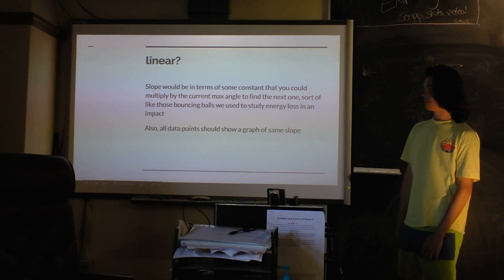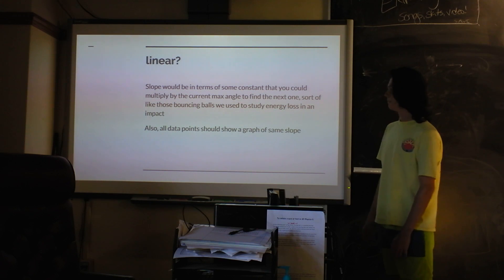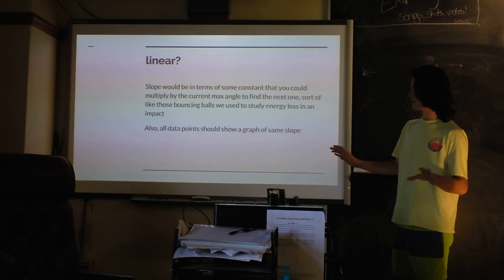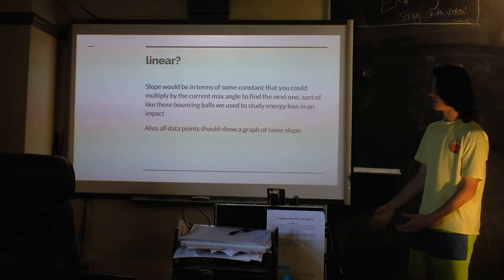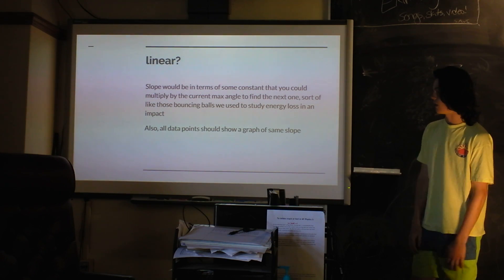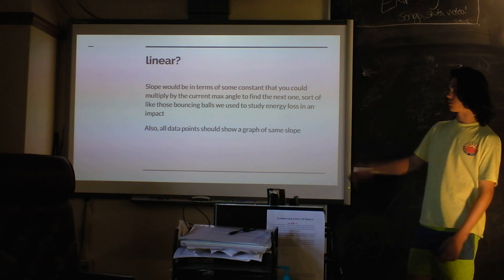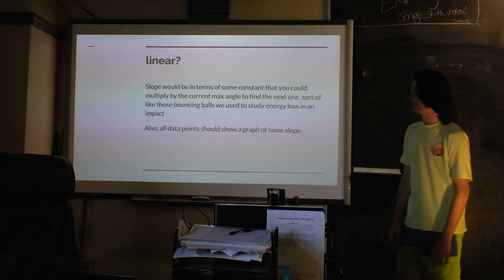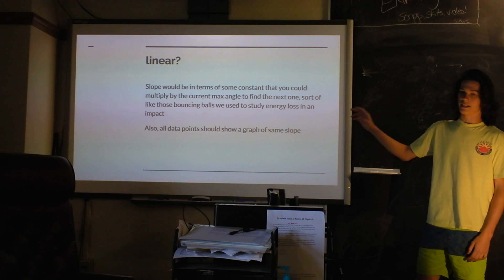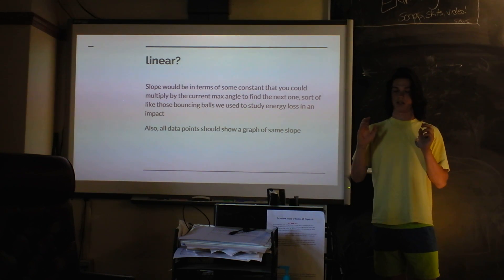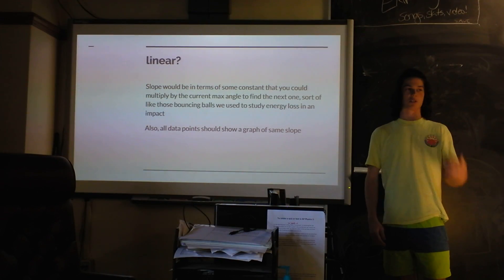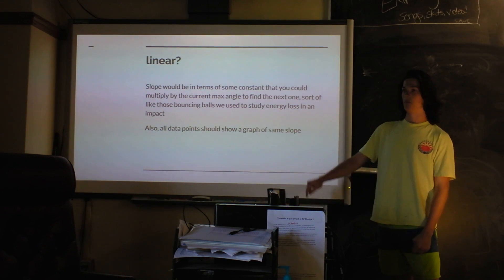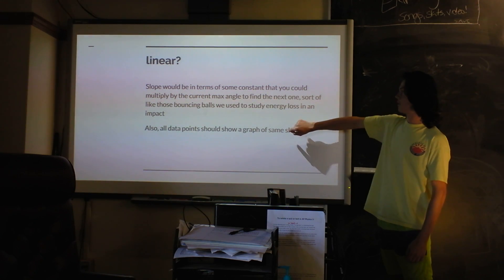Because naturally, you know, pretty sure it's not linear. But just to avoid any sort of preconceptions, I wanted to look at that seriously. And so the slope would have to be in terms of some constant that you could multiply by the current angle to find that angle of the next swing. And it's not. That doesn't really work out. Also, any data points that I took, I took sort of separate graphs for each angle because it takes a lot of time for each one. And each graph would have to have the same slope. And they didn't. And that didn't really make sense to me. But I'm going to discuss that later. So it's clearly not linear.